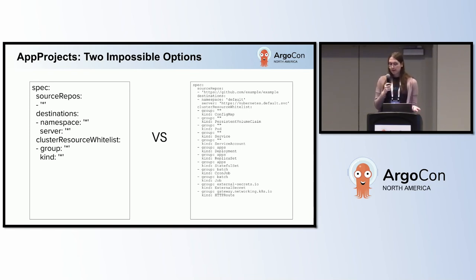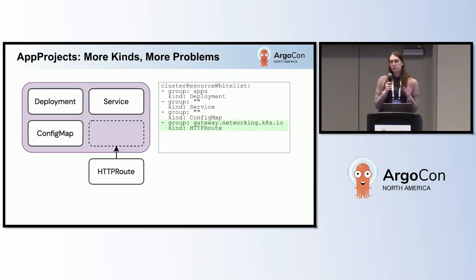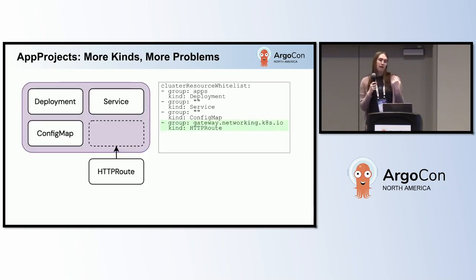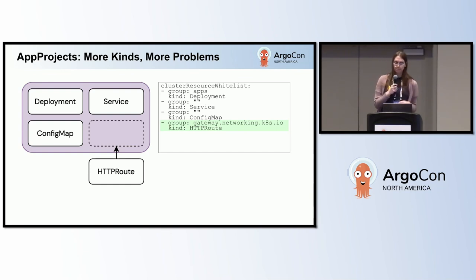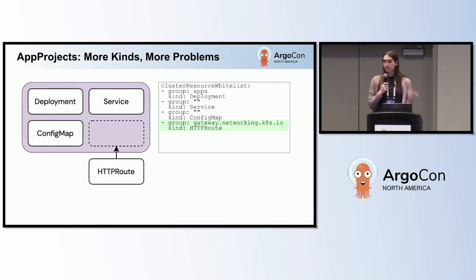So can we reconcile these in some way? What we'd really love is a situation where a team has some resources they're creating — like a deployment, a service, a config map — with an existing app project that has permissions to deploy these. And when they add a new resource type, like an HTTP route, that type of resource just gets automatically added to their app project.